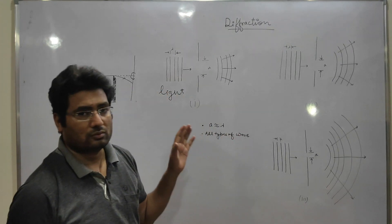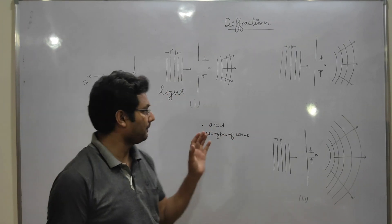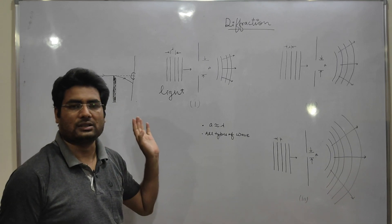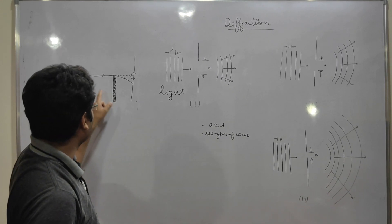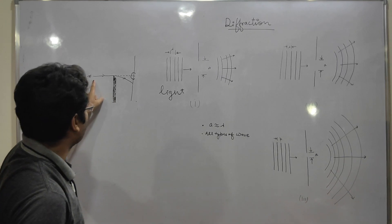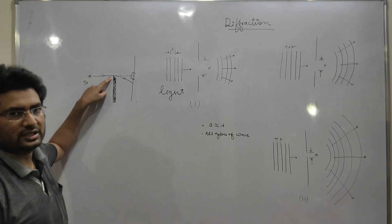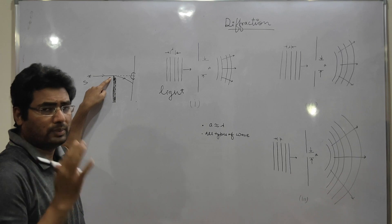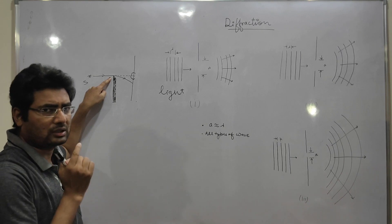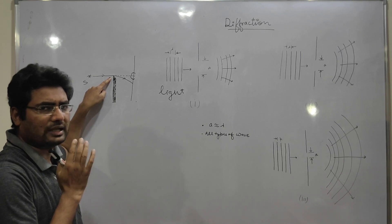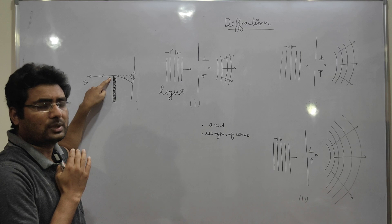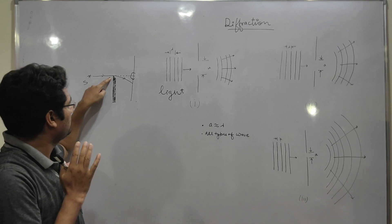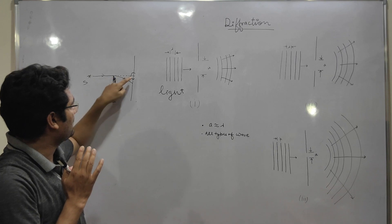What is diffraction? If we see here, there is an opaque obstacle. If there is light here and a sharp corner — like a razor or blade — we can see that because light travels in a straight line.